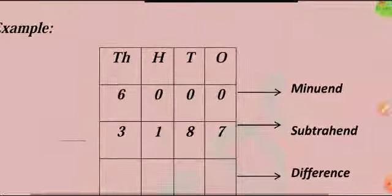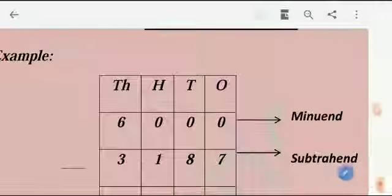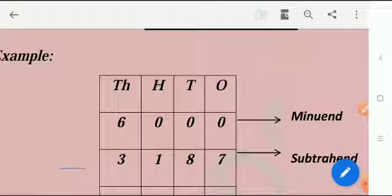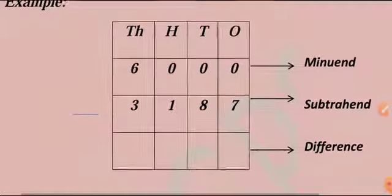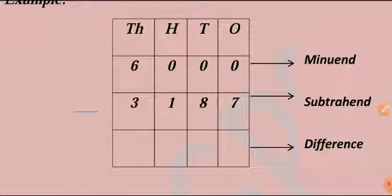When we have to subtract a number from another number containing zero, we do the regrouping in the same way as we do for the other numbers. Let us see how regrouping is done in the given example.